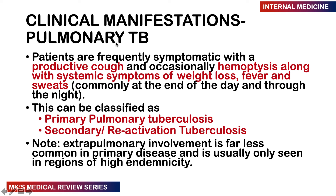Clinical manifestations of pulmonary TB include a productive cough that may be blood-stained (hemoptysis), along with constitutional symptoms: weight loss, fever, and drenching night sweats — patients describe waking up soaked in sweat. TB can be classified as primary pulmonary TB, where someone gets the infection for the first time and it causes active disease, or secondary/reactivation TB, which is either a reactivated latent infection or a reinfection.